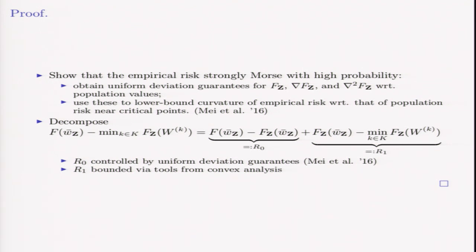We show this mostly in two parts. First, we show that the empirical risk is strongly Morse with high probability. We do this via uniform deviation guarantees provided by Mei, Bai, Montanari, all scaling with respect to square root of D over N log N.